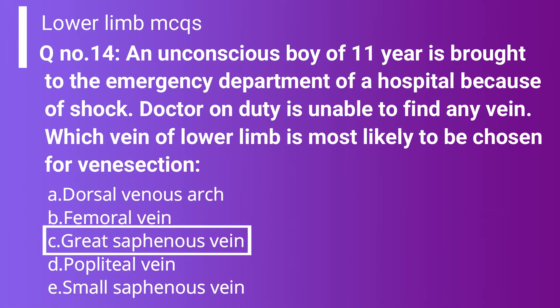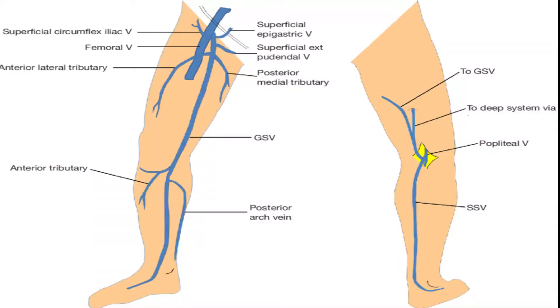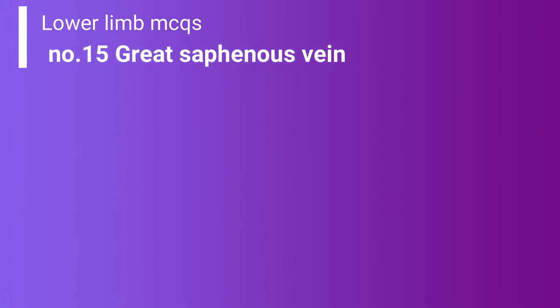The correct answer is option C, great saphenous vein, because in this scenario of shock we choose the great saphenous vein for venous access. Question number 15 is about the great saphenous vein: option A: receives a single tributary at the saphenous opening.